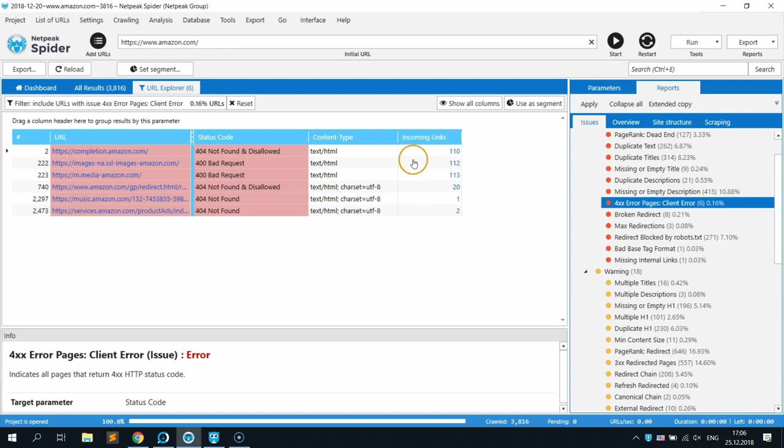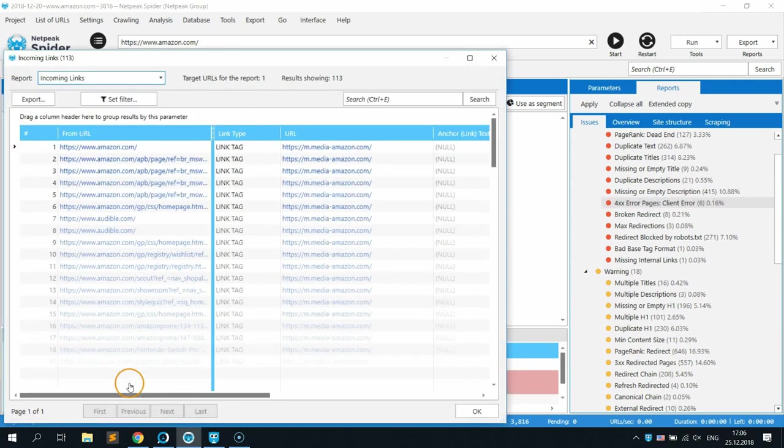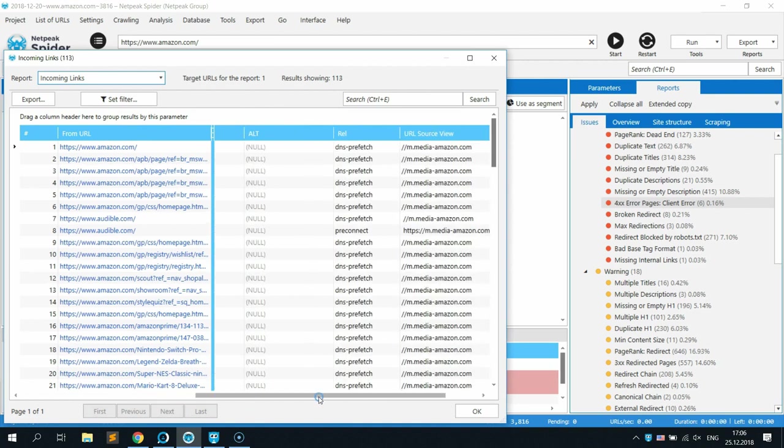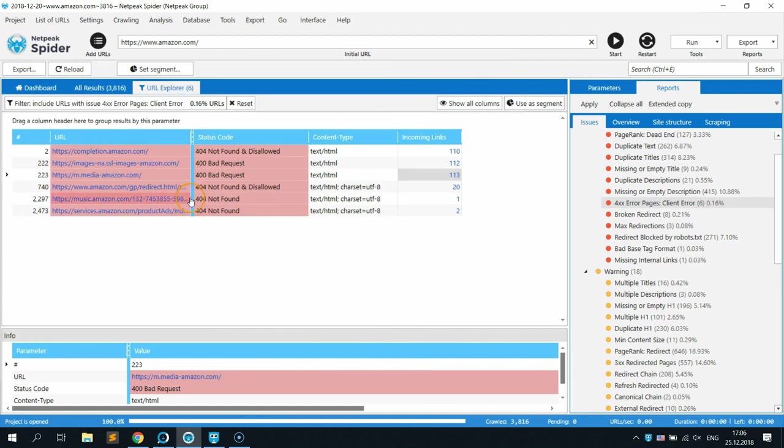After that, you are able to see all pages that refer to these 400 and 500 pages. Replace these links with the working ones and get rid of such nightmare as broken links on your website.